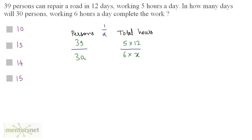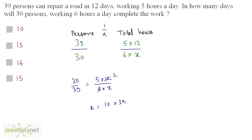Since we have an inverse proportion, we invert the ratio and write 30 by 39 equal to 5 times 12 by 6 times x. Since 6 twos are 12, x equals 5 times 2 times 39 by 30. Since 10 times 3 is 30 and 3 times 13 is 39, this equals 13 days. Option B is the correct answer.